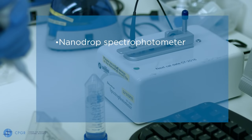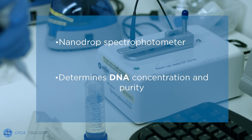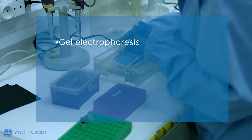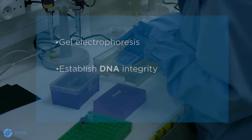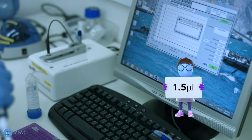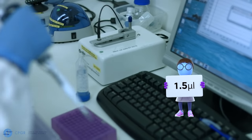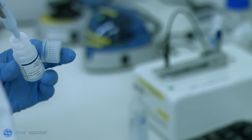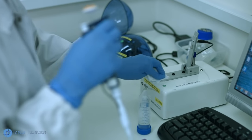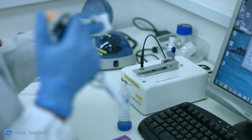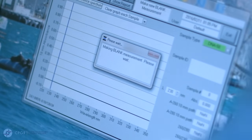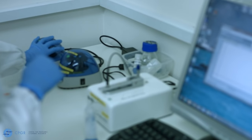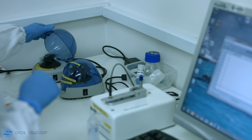We are going to use the nanodrop spectrophotometer to determine the DNA concentration and purity. This will be followed by gel electrophoresis to establish DNA integrity. For the nanodrop, we will use 1.5 microliters of DNA sample and we will use the AE buffer to blank the instrument, because this is what the DNA samples have been eluted in.